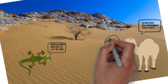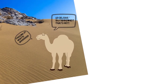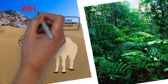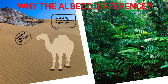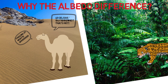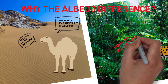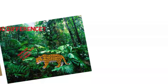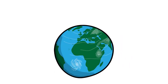This huge difference between deserts and rainforests is because humid air absorbs heat by day and retains it at night. Over the whole surface of the Earth, about 30% of incoming solar energy is reflected back into space.